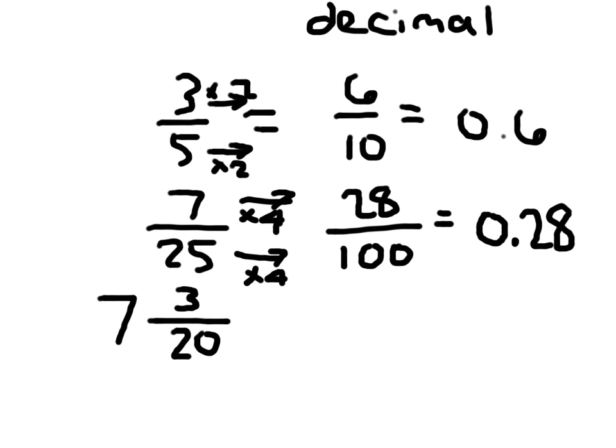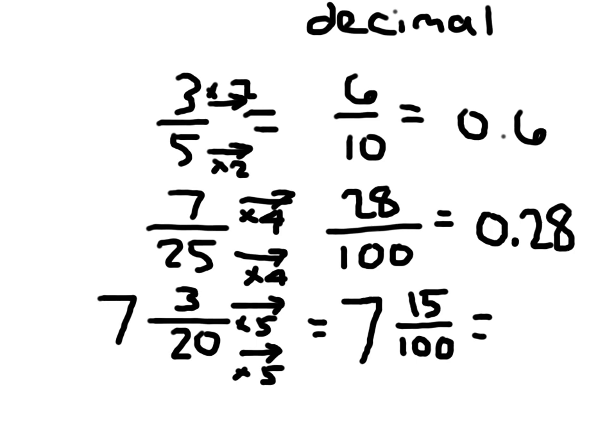For our final number here, I have 7 and 3 twentieths. What number can I multiply both the numerator and denominator by? I'm going to get a mixed number here. So I'll write the 7 first while you're thinking about that. Did you say 5? Hope you said 5. Because 20 times 5 is 100. And 3 times 5 is 15. 7 and 15 hundredths. How do I write that? Some students will forget to write that 7 there. So don't fall into that mistake. Point 1, 5.